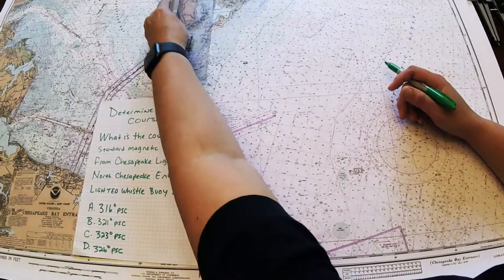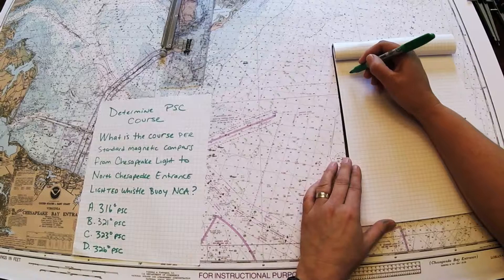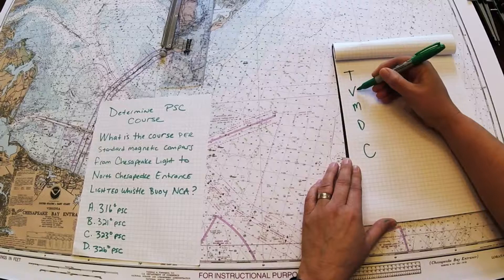So what I'm going to do is take that information and I'm going to transfer it down to a PSC because the answers are in PSC per standard compass. So T, V, M, D, C. True, variation, magnetic north, deviation, compass.